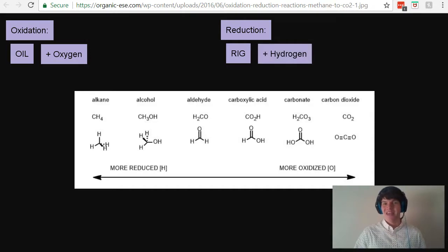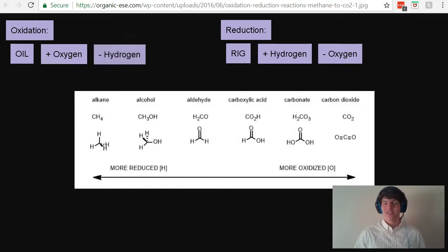Now based on that, it should follow that if you're removing bonds to oxygen, you're reducing something. And if you're removing bonds to hydrogen, you're oxidizing something. So as a summary, to oxidize something, you can either add bonds to oxygen or remove bonds to hydrogen. To reduce something, you can either add bonds to hydrogen or remove bonds from oxygen.